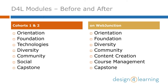If you are a member of Cohorts 1 or 2 for our initial versions of the program and you're returning to complete additional modules, you may notice that the order of the modules and some of their names have changed. The Technologies module has been renamed as the Content Creation module and moved to later in the series, after Foundation, Diversity, and Community. The Community and Social modules have been combined into one and moved earlier in the series, right after Diversity.